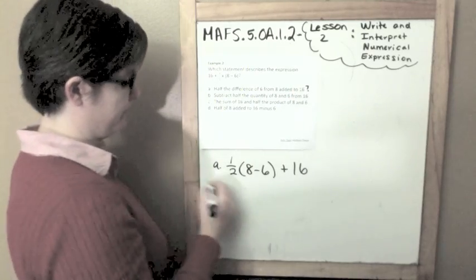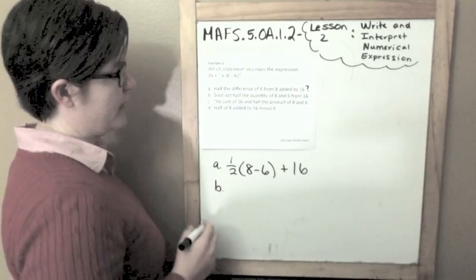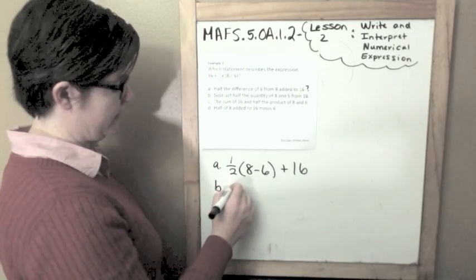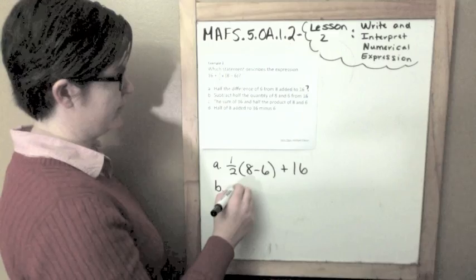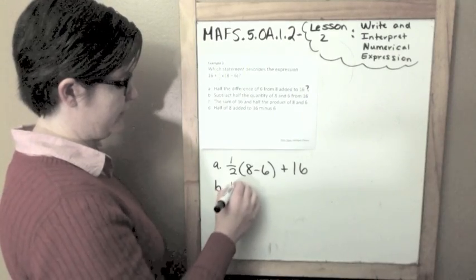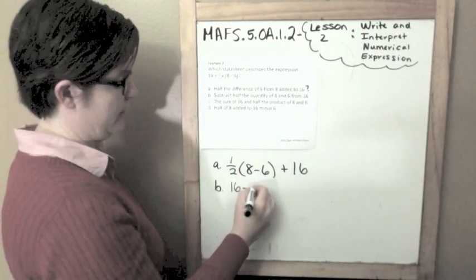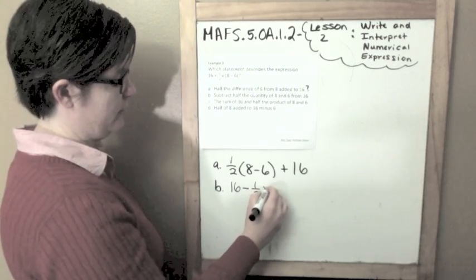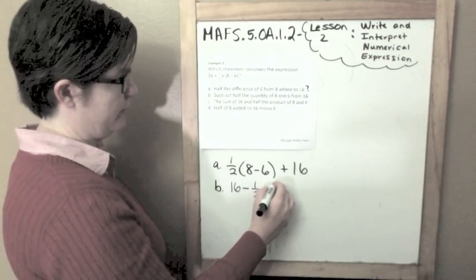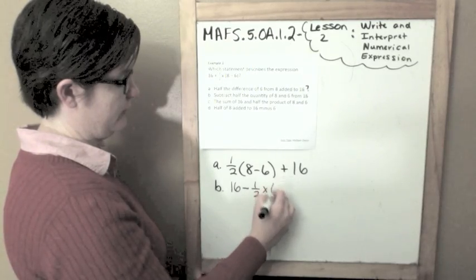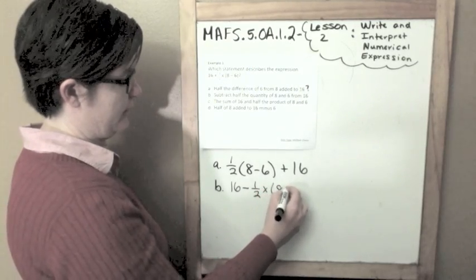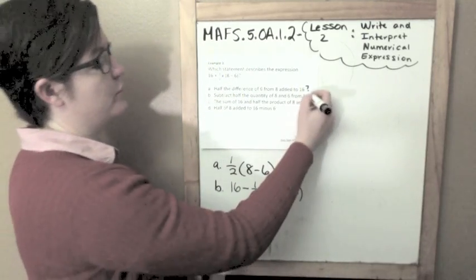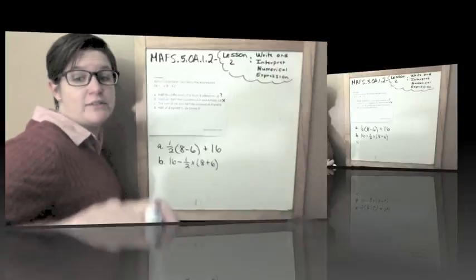B: subtract half the quantity of 8 and 6 from 16. So I have 16 and I'm subtracting half the quantity of 8 and 6. That looks nothing like what I have up there, so B is not the answer.